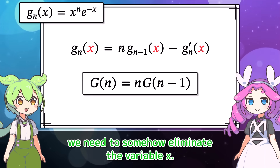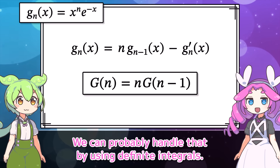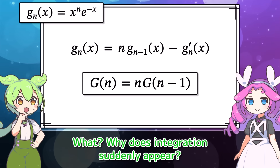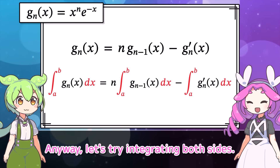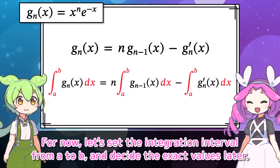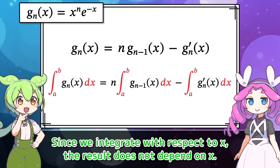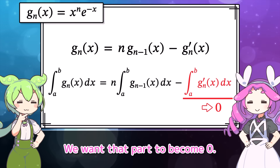Now we need to somehow eliminate the variable x, and that extra term also bothers me. We can probably handle that by using definite integrals. Let's try integrating both sides — for now, let's set the integration interval from a to b and decide the exact values later. Since we integrate with respect to x, the result does not depend on x. But we're still worried about this extra term — we want that part to become 0.